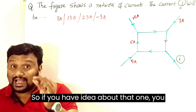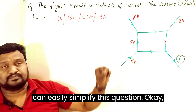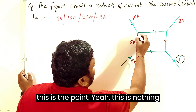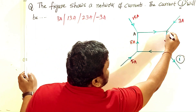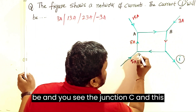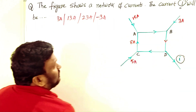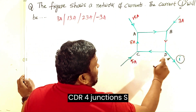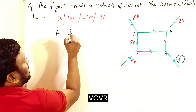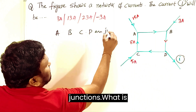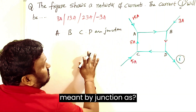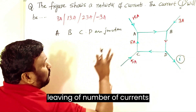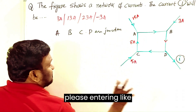If you have an idea about that, you can easily simplify this question. Now, this is junction A, junction B, junction C, and junction D. A, B, C, D are four junctions. What is meant by a junction? It is the combining or leaving of a number of currents at one point — that point we call a junction.